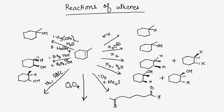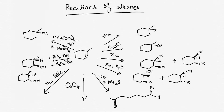We have also seen alcohol-forming reactions — ways to convert an alkene to an alcohol. These include reaction with H3O+, which puts the OH on the more substituted carbon; oxymercuration and reduction, which also puts the OH on the more substituted carbon but without carbocation formation or rearrangement; and hydroboration and oxidation, which puts the OH on the less substituted carbon.